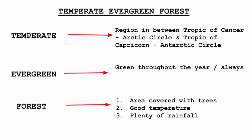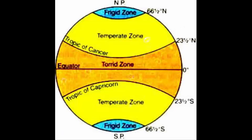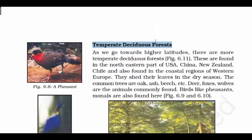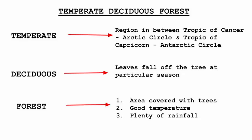The next type is Temperate Evergreen Forest. Temperate refers to the region between the Tropic of Cancer and the Arctic Circle in the northern hemisphere, and between the Tropic of Capricorn and the Antarctic Circle in the southern hemisphere. You can see this region clearly on a map. These forests have both hardwood and softwood trees like oak, pine, and eucalyptus.